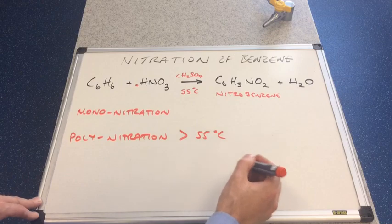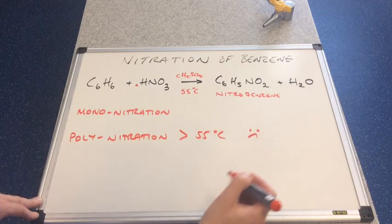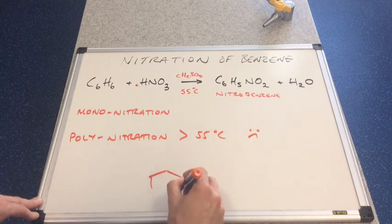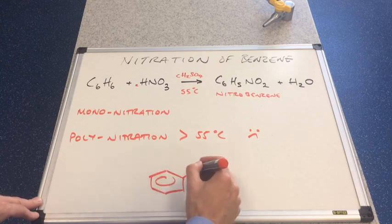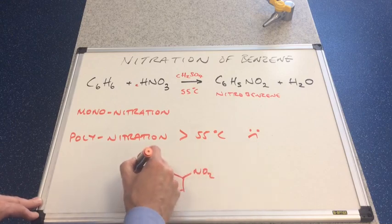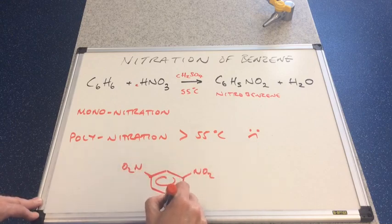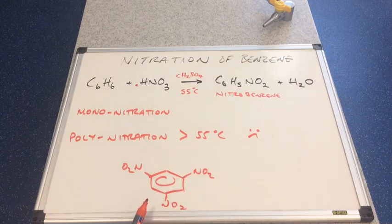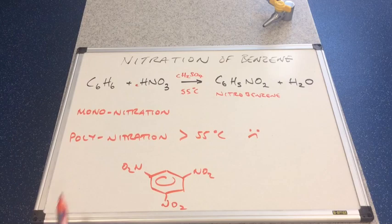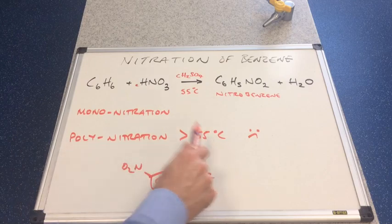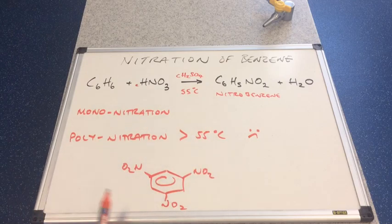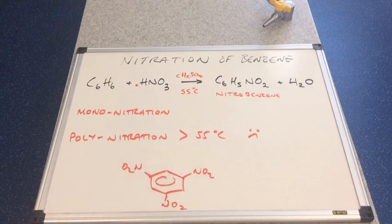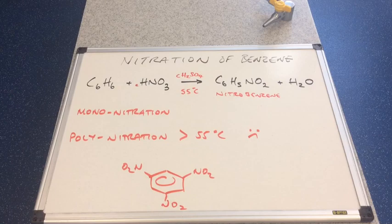You don't want polynitration because a polynitro compound would have more than one nitro group. Mononitration occurs when the temperature is kept at 55 degrees C. If you have it too hot, then you run the risk of producing a polynitro arine, which is potentially explosive.